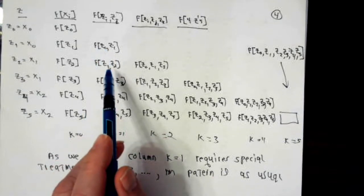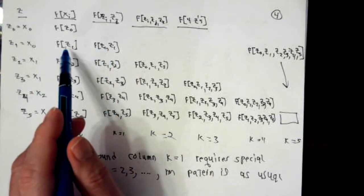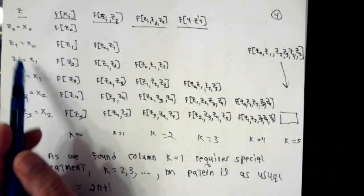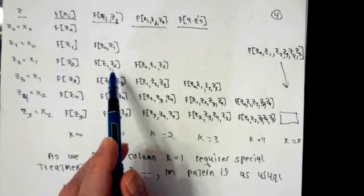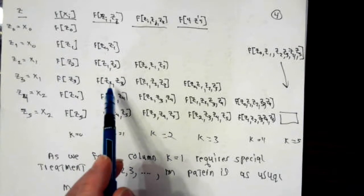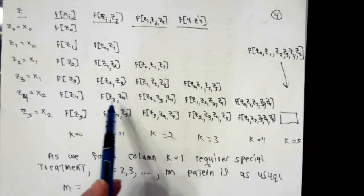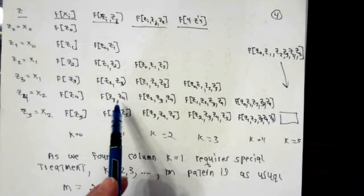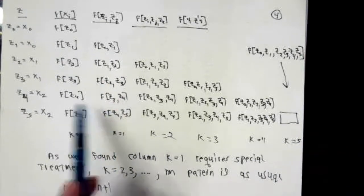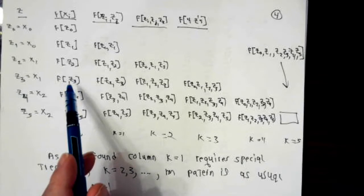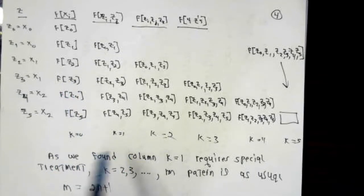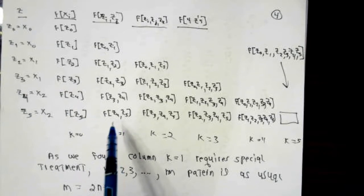This number is that number minus that number divided by the difference of the corresponding z numbers. This number is a derivative value. It's f prime at x1. This one is calculated in the usual recursive manner, that minus that, divided by the difference of two z numbers. And this one is a derivative value. This one is going to be f prime evaluated at x number 2.